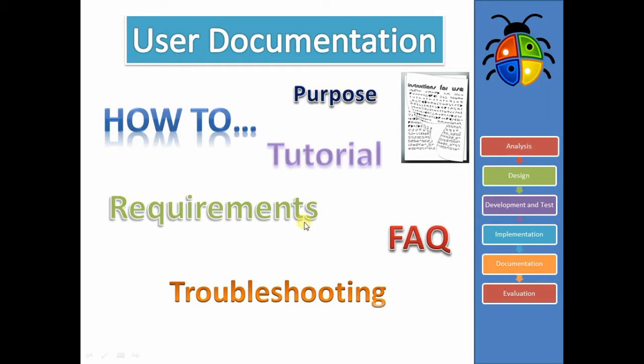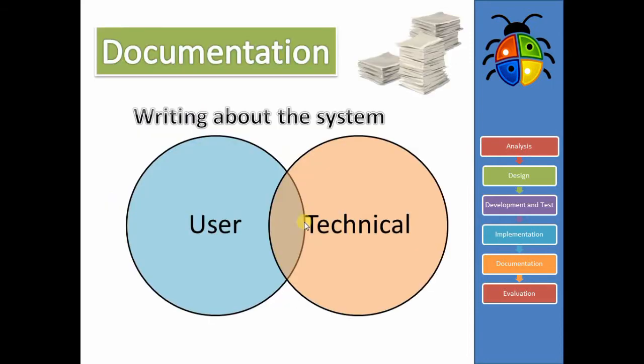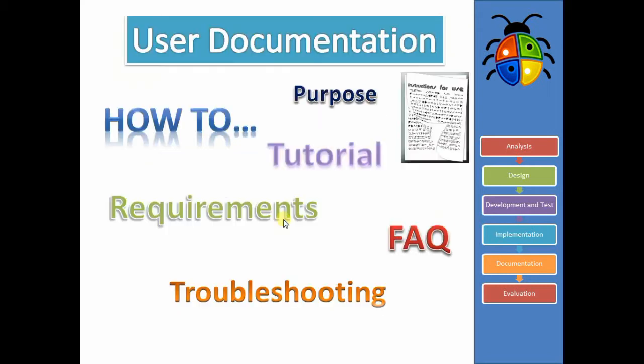You'd have some kind of technical information. So, if we jump back, you'll see that there is this zone in the middle of our Venn diagram, where our documentation is going to cross over a little bit. So, you might have things about system requirements, and you might have some information on how to fix little problems that non-technical people can fix. And, of course, you might have something like a frequently asked questions section to help people with common problems.